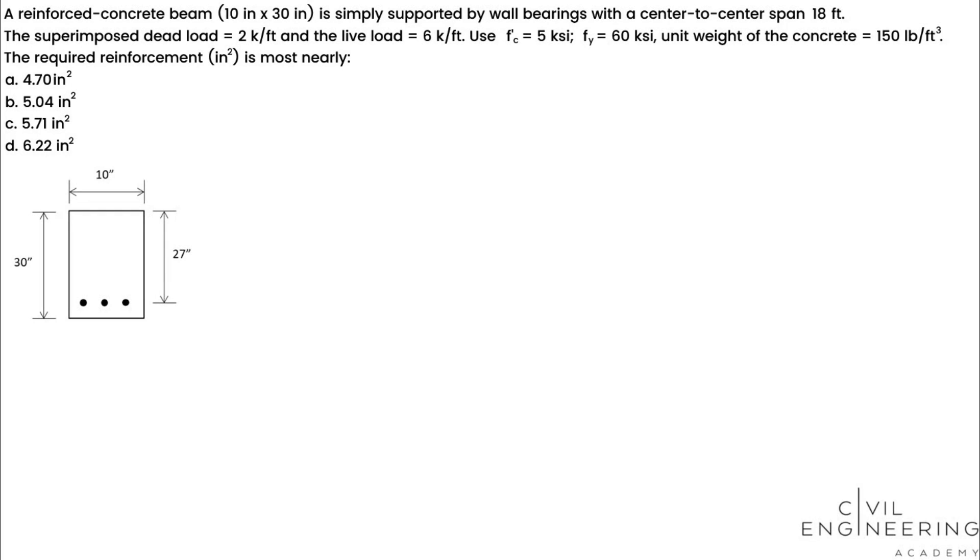A reinforced concrete beam, 10 inches by 30 inches, is simply supported by wall bearings with a center-to-center span 18 feet. It has a superimposed dead load 2 kip per foot and a live load 6 kip per foot. We're using f'c equals 5 ksi, fy equals 60 ksi. The unit weight of the concrete is 150 pounds per cubic foot. We're going to determine the required reinforcement for this cross-section under the applied load.